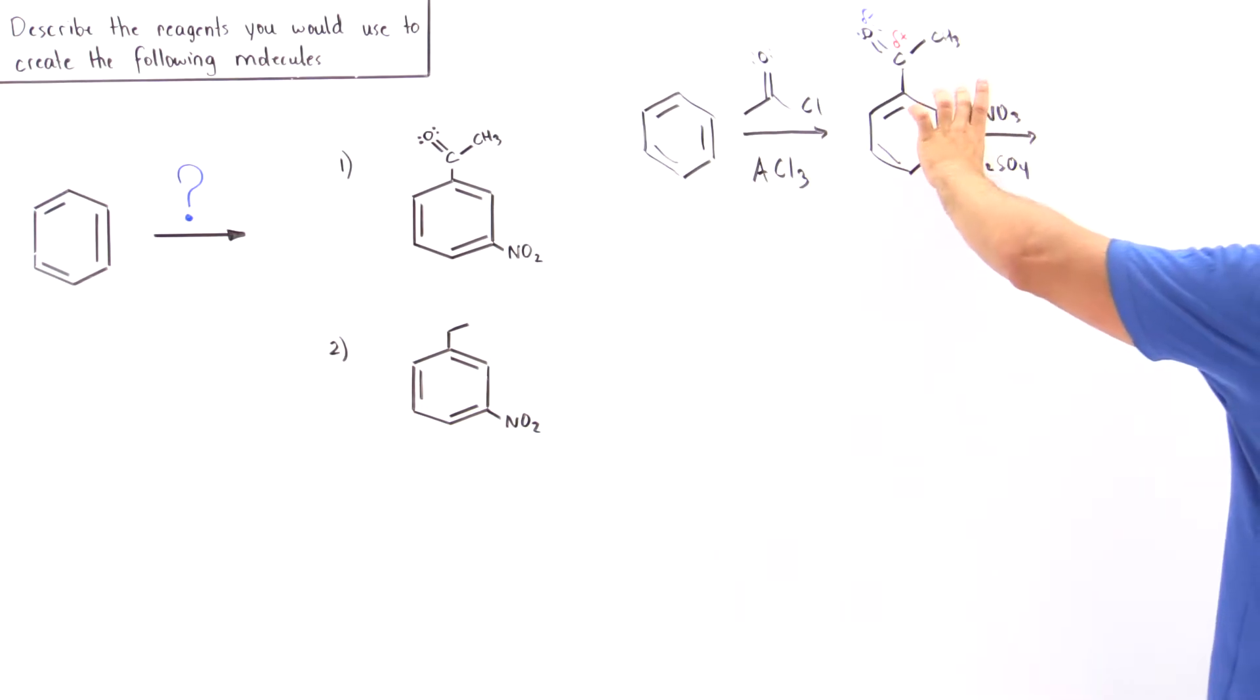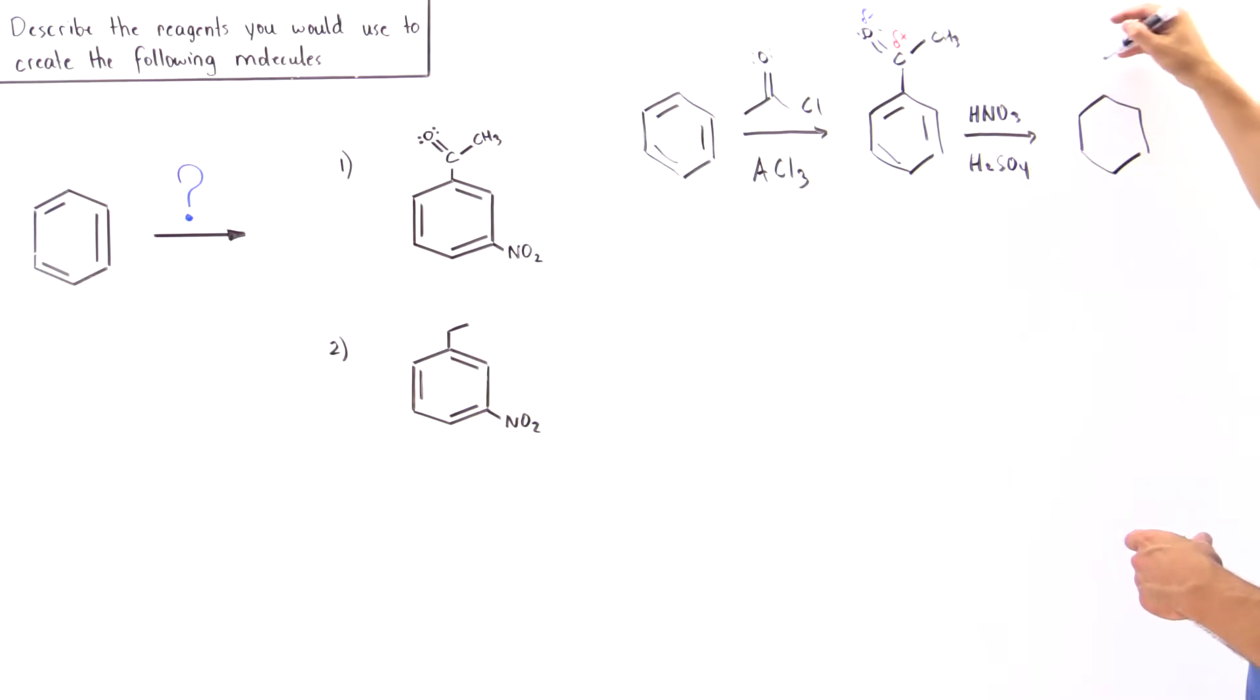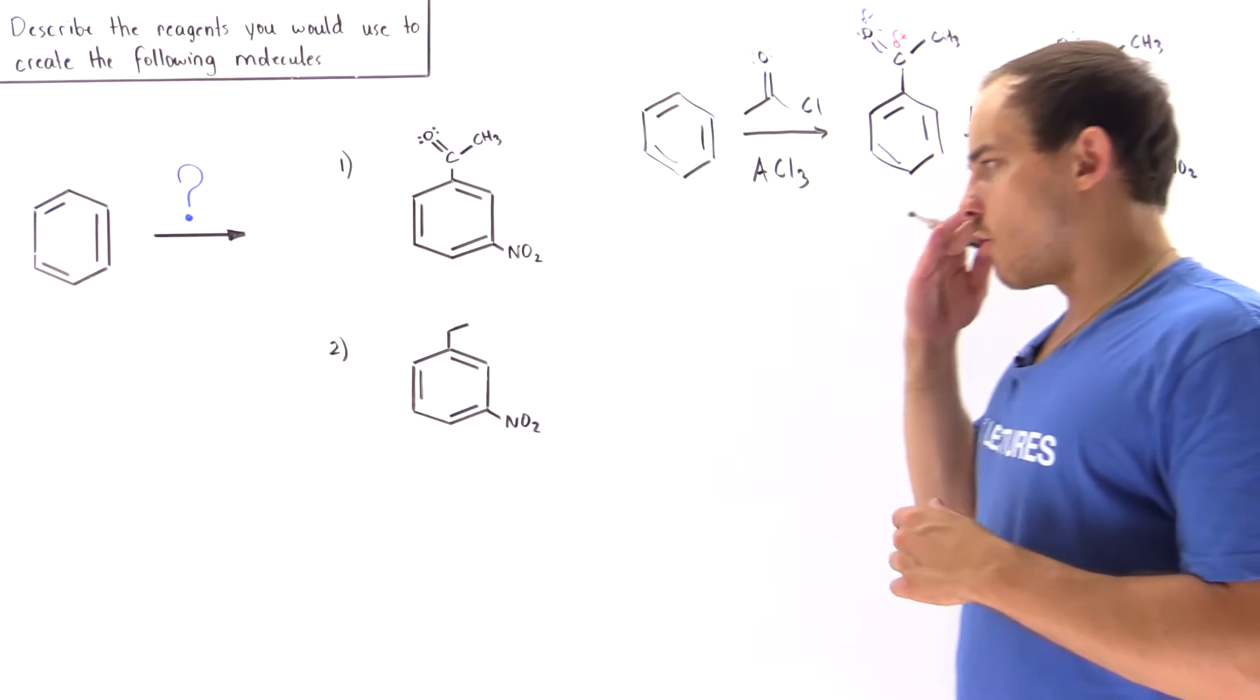And that's exactly why if we take these two reagents, our nitric acid and sulfuric acid, we produce a nitrated benzene group in which these two groups are substituted meta to each other. So we have our acyl group here and we have our NO2. This is the final product that we wanted to form.